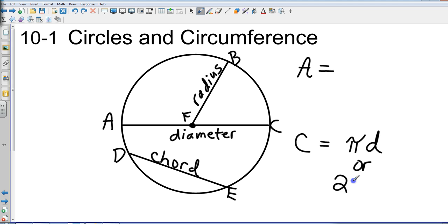Or two times pi times the radius (2πr). And then that leaves our formula for area to be pi times radius squared (πr²).